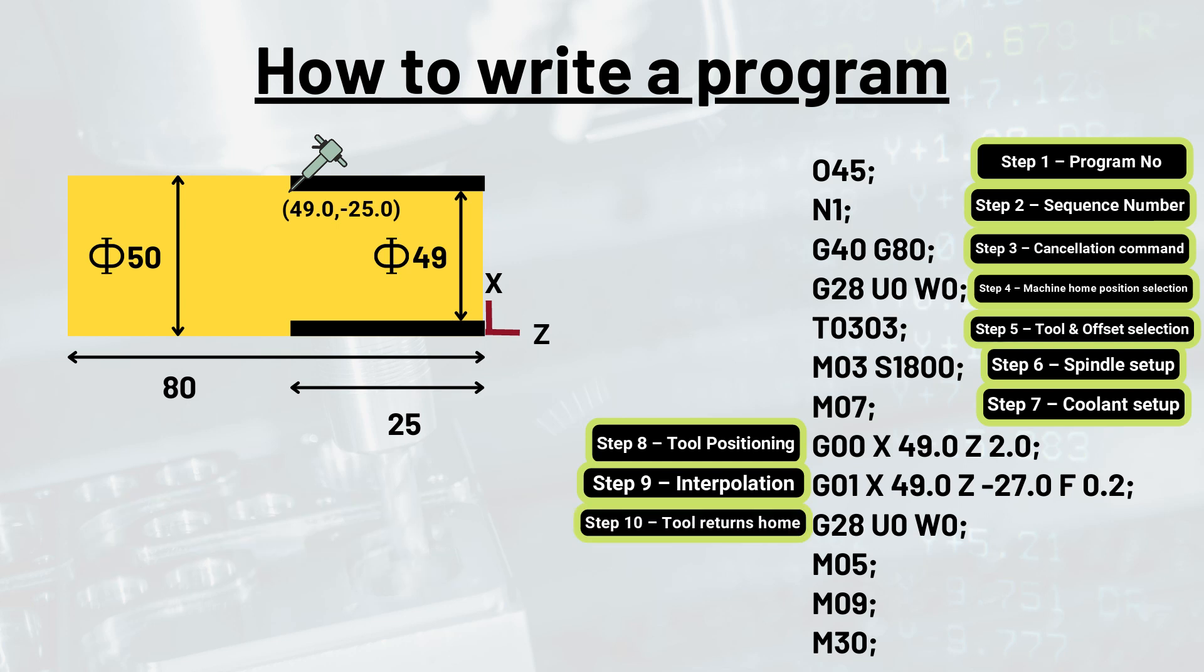In the next step, we will retract the tool. This step is also known as tool return home. We will simply select machine home positioning selection command to return the tool home. That is, we are just repeating the fourth step here: G28 U0 W0.